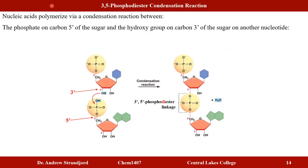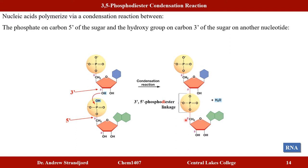Nucleotides come together to form nucleic acids via a condensation reaction between the phosphate group of one nucleotide and the 3'-hydroxy group of the sugar of the next nucleotide, forming a 3'-5' phosphodiester linkage — so named because there are two phosphate esters joining carbon-3 of one sugar to carbon-5 of the next.